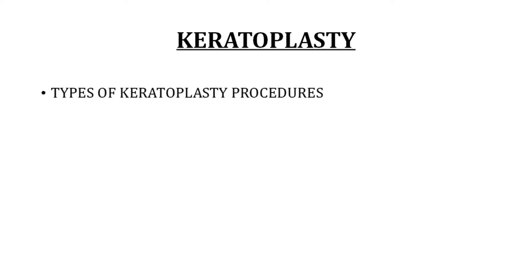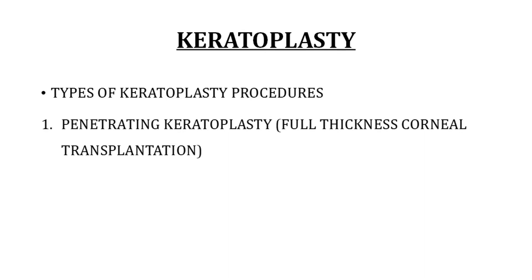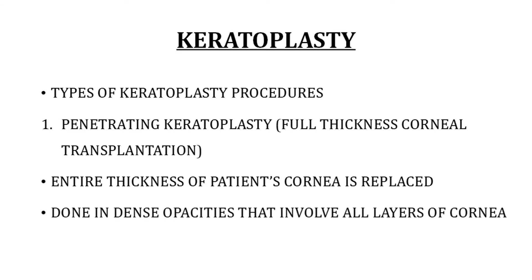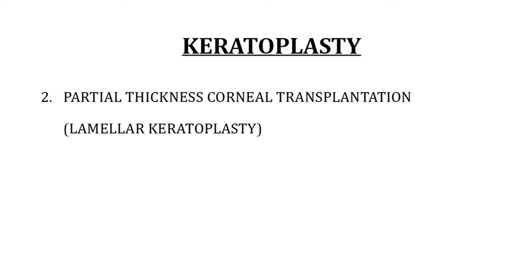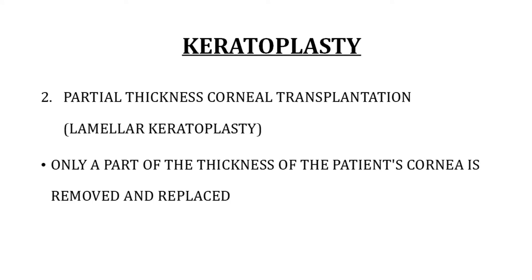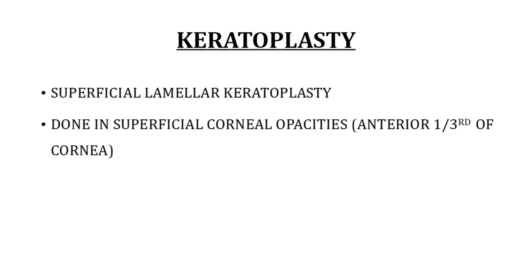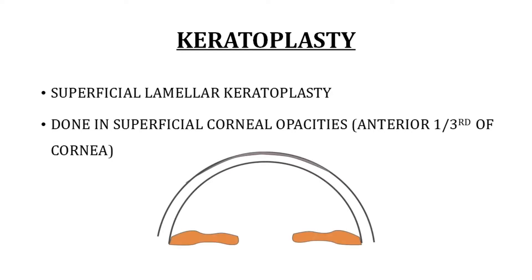Depending on the density of corneal opacity, different types of keratoplasty can be performed. Penetrating keratoplasty is full-thickness corneal transplantation in which the entire cornea is replaced; it is done in dense opacities involving all layers of the cornea. Lamellar keratoplasty involves removing only part of the corneal thickness. Superficial lamellar keratoplasty treats opacities restricted to the anterior one-third of the cornea — only the opaque portion is removed and replaced with donor tissue, while the deeper stroma, Descemet's membrane, and endothelium are left intact.